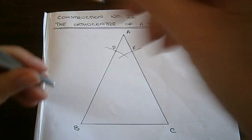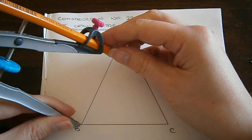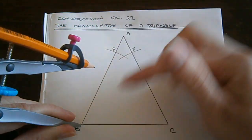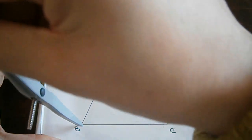Next, I take my compass, I place it back on B again. I adjust it so that it's greater than half the width between B and D. I draw an arc outside my triangle.